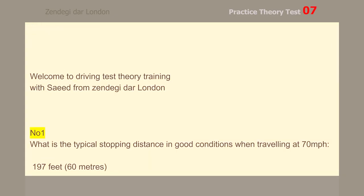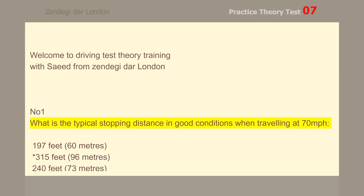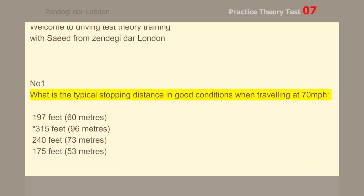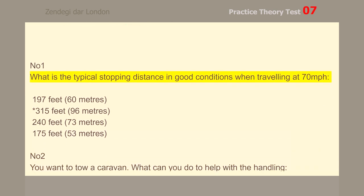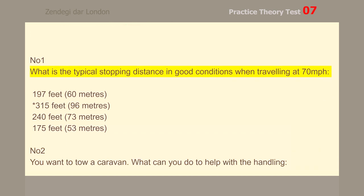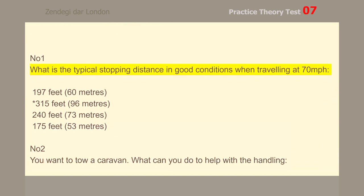Number 1. What is the typical stopping distance in good conditions when traveling at 70 mph? 315 ft / 96 m.